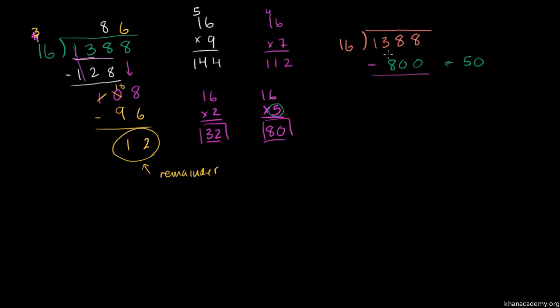16 times 5, I know ahead of time, is 80. So 16 times 50, I've multiplied by 10, 5 times 10, it'll get us to 800. And then I just subtract. So I subtract here. 8 minus 0 is 8, 8 minus 0 is 8, and then you could say 13 minus 5 is 588. And now we ask ourselves, how many times does 16 go into 588?